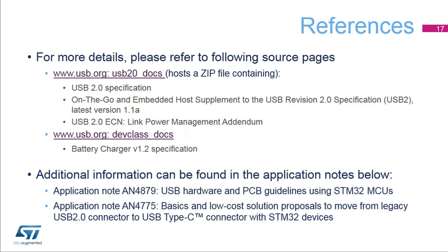For complete USB specification documents, please refer to usb.org. The USB 2.0 document home page has a zip file containing the USB 2.0 and OTG 2.0 specifications and an ECN for LPM. The USB device class documents page has the battery charger specification. Additional information can also be found in the referenced application notes.